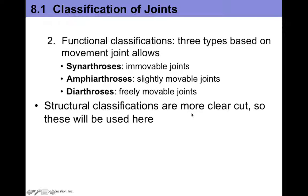The structural classifications are more clear-cut in terms of what they're made of, but we can also make predictions about how movable a joint is based on its composition. Most fibrous joints are going to be synarthrotic. Many cartilaginous joints are either synarthrotic or amphiarthrotic. And all synovial joints are diarthrotic, or freely movable.